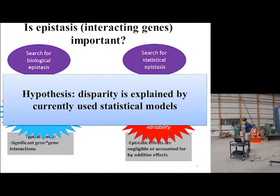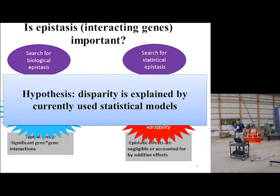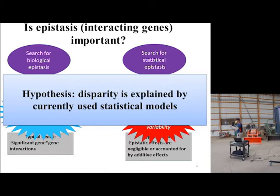The first story I'm going to tell you about, which I think can have important plant breeding applications, is the search for epistasis. Briefly, what I mean by epistasis is the interaction between genes. When you search for biological epistasis, a typical study will do a knockout mutation or something like that, and they'll find that gene-by-gene interactions are important. So they will conclude that epistasis plays a major role in trait variability.